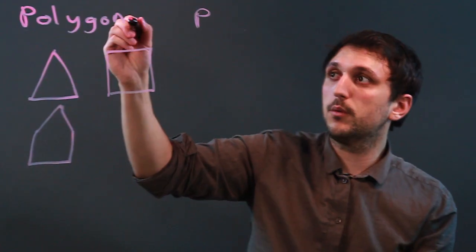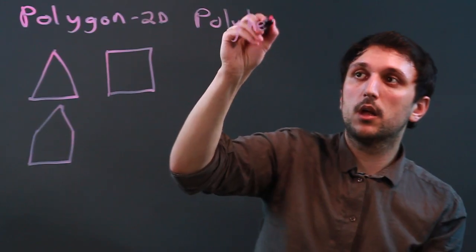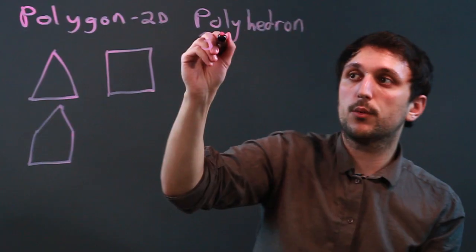Now a polyhedron. So polygon, we're going to say, is 2D. A polyhedron is three-dimensional, 3D.